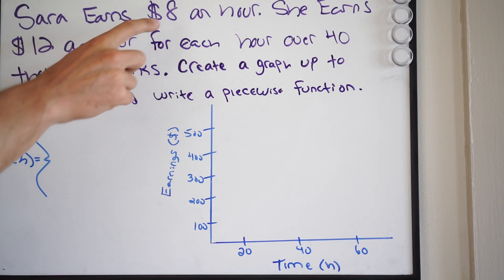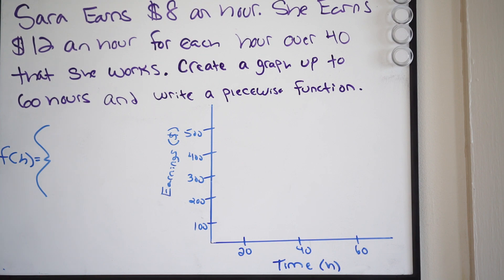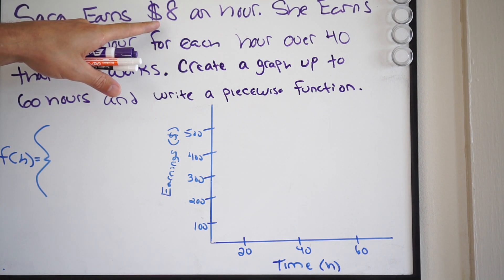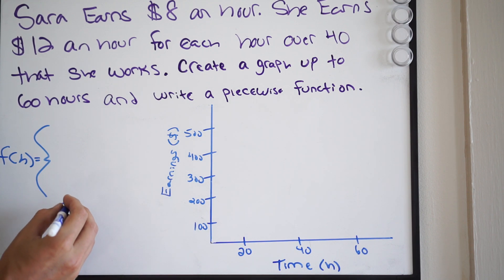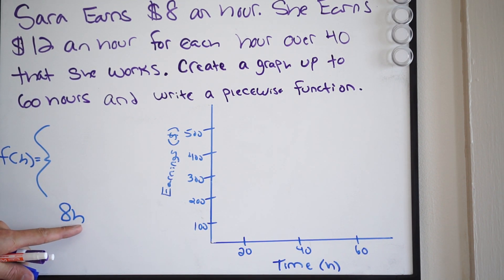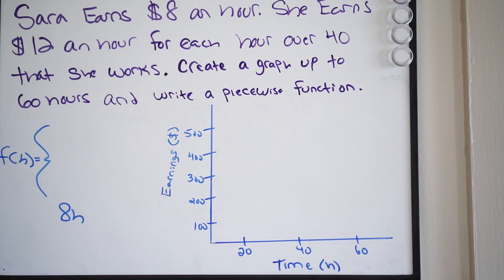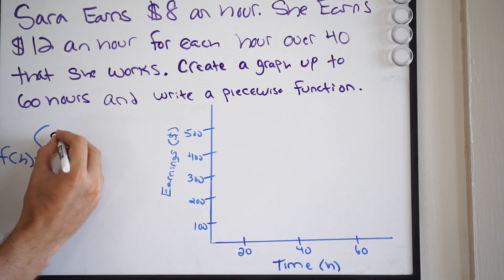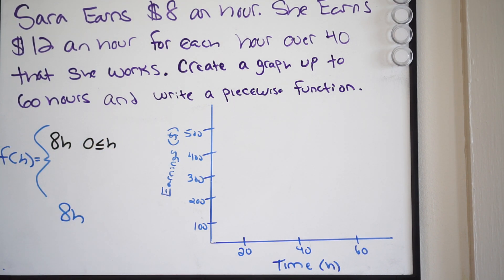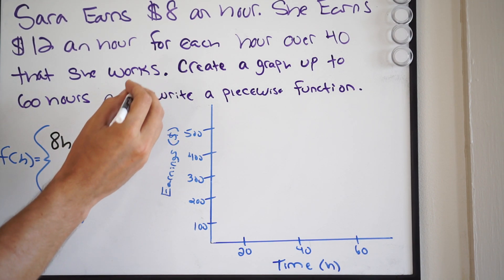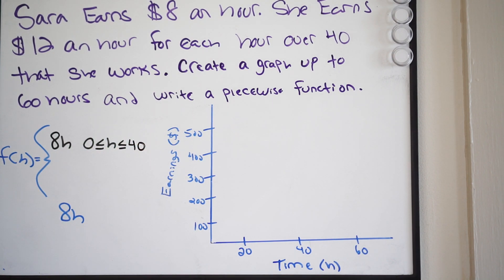Let's set up the first function. It says she earns $8 an hour, so this is going to be linear. For every hour that she works, she's going to make $8, and that goes all the way up to 40. So the first piece is 8H. The rule is H has to be greater than or equal to zero and less than or equal to 40.